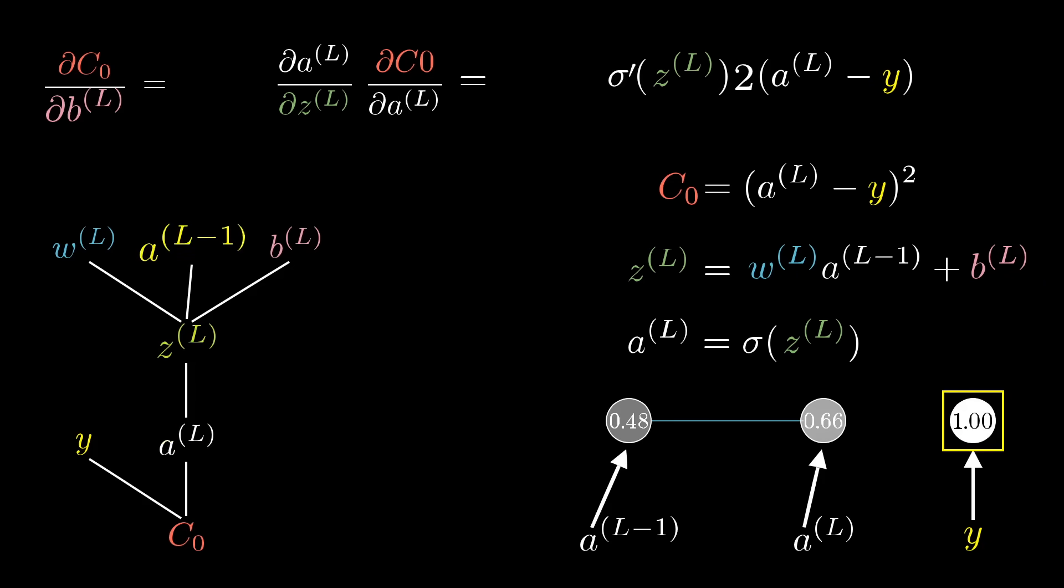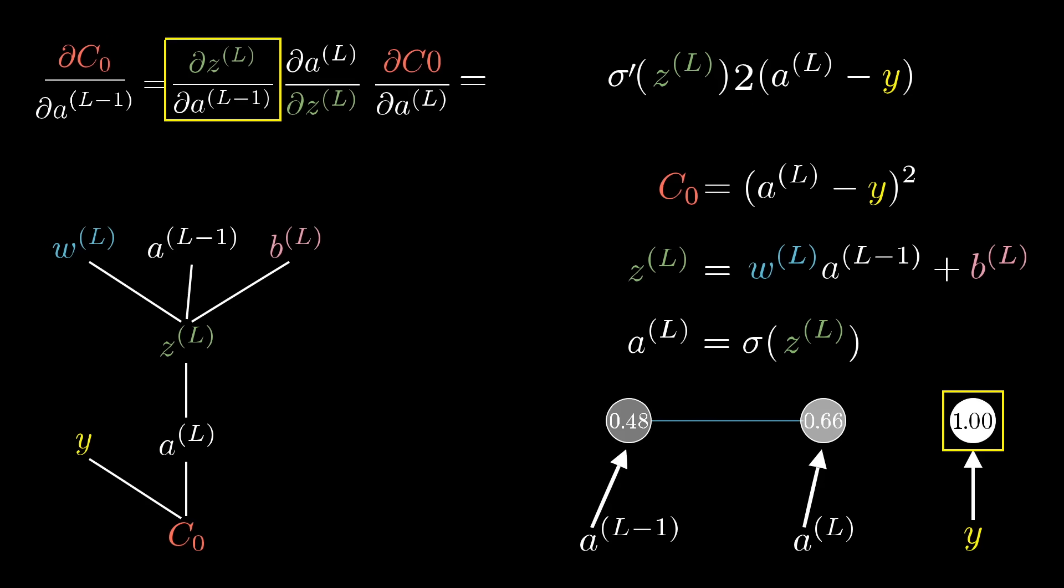Also, and this is where the idea of propagating backwards comes in, you can see how sensitive this cost function is to the activation of the previous layer, namely this initial derivative in the chain rule expression, the sensitivity of z to the previous activation, comes out to be the weight w^l.